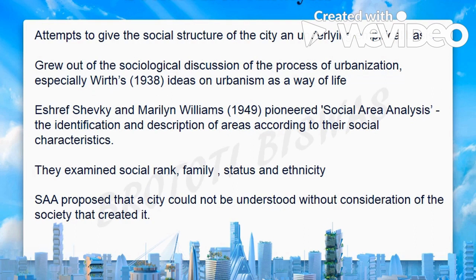What they did was take three important things: social rank, family status, and ethnicity as the important prerequisites to study any society or urban area. Their technique was based upon an empirical basis — specifically a statistical procedure based upon certain variables. These variables could be differentiated into economic variables and social variables, and based upon these variables they built their theories.